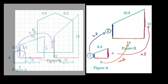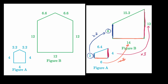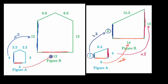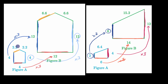Let's do one more example. Pause the video and see if figure B is a scaled version of figure A. Let's look at potentially corresponding sides. From four to twelve, we multiply by three. Looking at the next pair — four to twelve — again multiply by three. And this pair — four to twelve — multiply by three once more. Then 2.2 to 6.6, multiplying by three again.